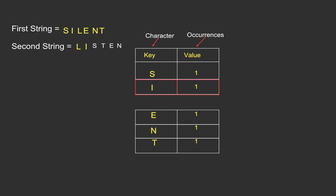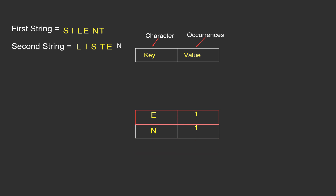We move to the next character I — it has a presence in the map with occurrence one, so we remove its entry. The same is the case with S — it is present in the map with occurrence one, so we remove its entry. T, E, and N are all removed from the map as well. Now at the end, we check whether our hash map is empty. In this case, it is empty, which implies that all the characters in both strings have been matched. Hence, the two given strings are anagrams.